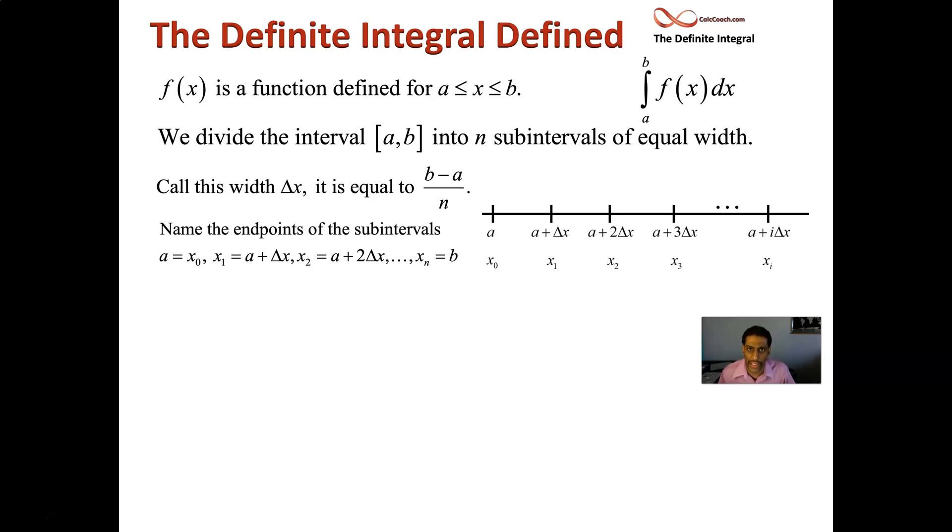And what we call this is, the first one, a is going to be called x sub zero, or sometimes read x naught. And then we'll have x one and x two and x three, and you're going to end at x n. There'll be n of them. And what we want to focus our attention on is someplace generically in the middle. Call it i.